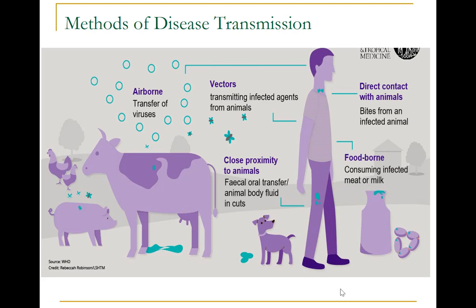Vector-borne and zoonotic diseases can be transmitted through closeness or contact, such as contact with the skin, a bite or scratch from an animal host, or a bite of a vector. Direct inhalation of airborne transfer, such as anthrax spores or influenza virus. Ingestion such as foodborne transmission, waterborne transmission, and hand-to-mouth transmission. In direct transmission, an infectious agent is transferred from a reservoir to a susceptible host by direct contact or droplet spread.